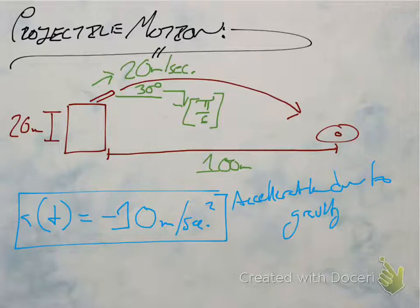So, how close are we going to come to hitting this target 100 meters away? This is all the information I can give you right now. I want to see if we can figure it out from just this information — and it turns out we can. So, what do we need to do first? Let's get started.